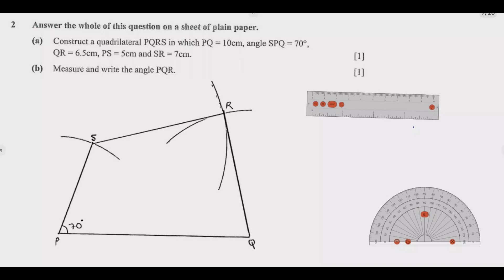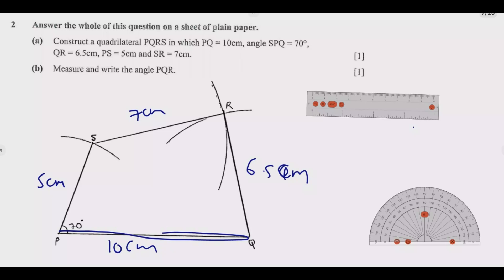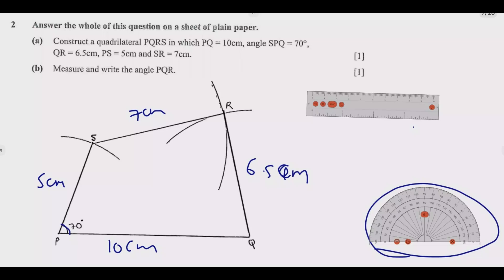Once you answer questions A and B, the shape should look like this. The first step is to construct PQ at 10 centimeters using your pencil and ruler — this is the longest side. Then PS is 5 centimeters and SR is 7 centimeters, and QR is 6.5 centimeters. Draw the longest side first, then use the protractor to measure the 70-degree angle. Then use the compass, measured to 5 centimeters on the ruler, to make the arc for point S.